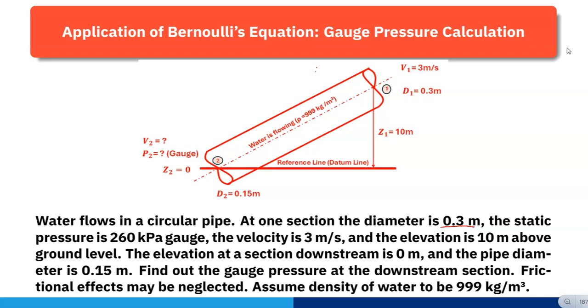The elevation is 10 meter above the ground level. So this point I'm considering as section one. Here v1 is 3 meter per second, diameter is 0.3 meter, and pressure p1 is 260 kilopascal. The elevation z1 is 10 meter.